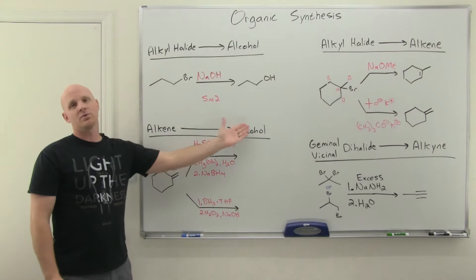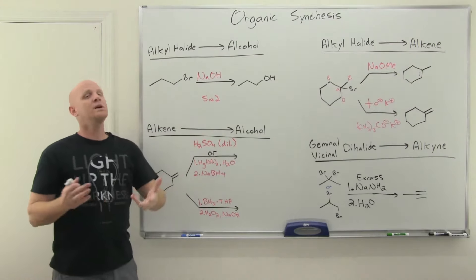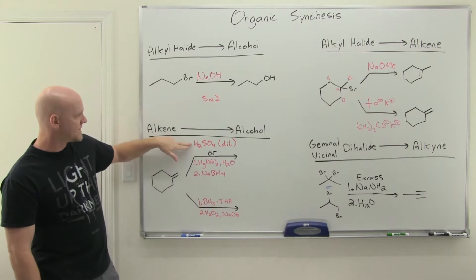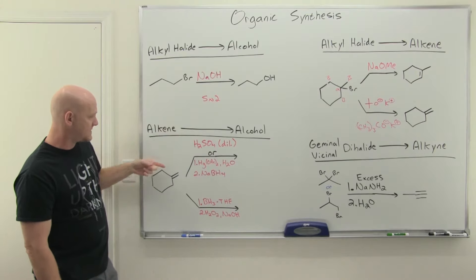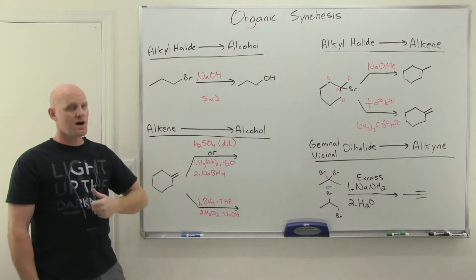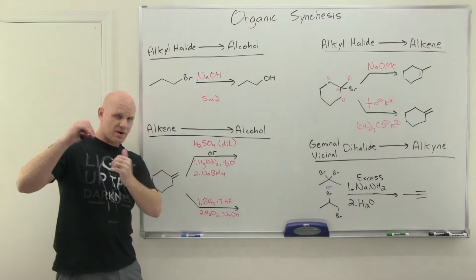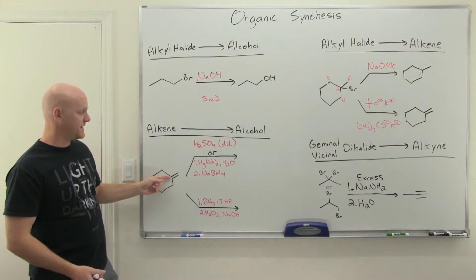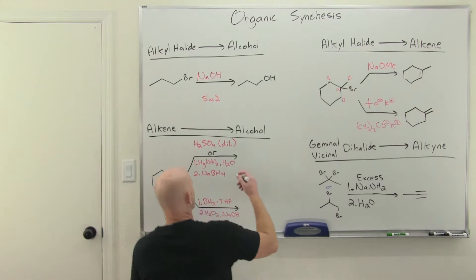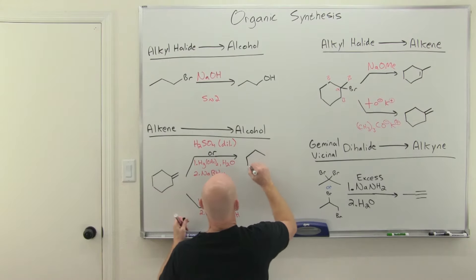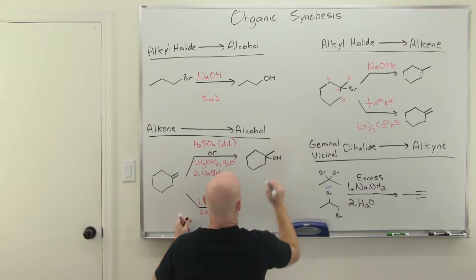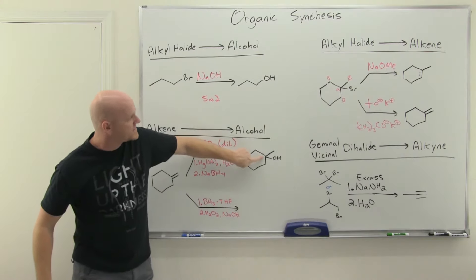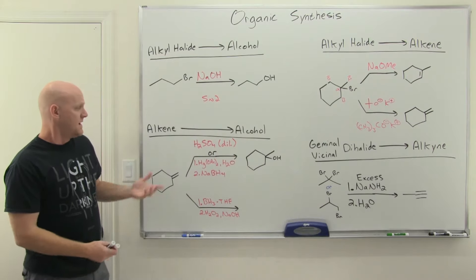Another way to make an alcohol is to turn an alkene into an alcohol. You had three different hydration reactions. The first is acid-catalyzed hydration with H2SO4 and water, which adds H and OH Markovnikov — it goes through a carbocation and is subject to rearrangements. In this example, a tertiary carbocation forms and it won't rearrange, giving the OH on the more substituted side.